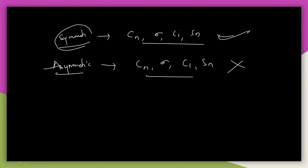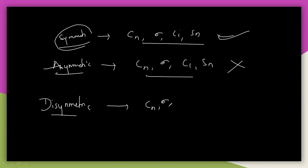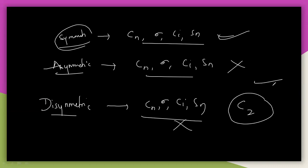The last type is the disymmetric molecule. A disymmetric molecule has symmetry elements like Cn and sigma, Ci, Sn — but it has a Cn axis, specifically a C2 axis, while lacking the improper rotation elements.